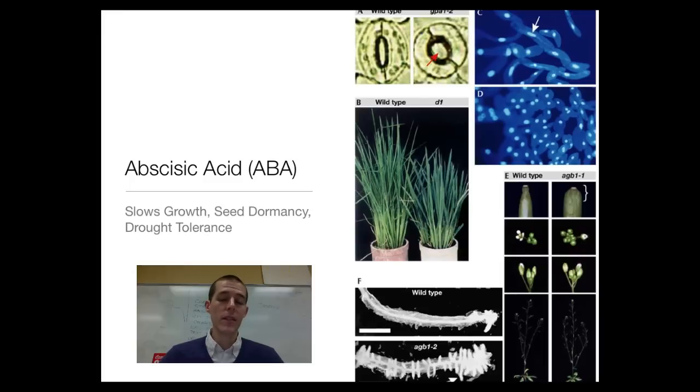This is what keeps seeds from germinating until the spring or when the conditions are right. It keeps seeds from germinating inside of a fruit. ABA also works on drought tolerance. If a plant starts to wilt, ABA causes the stomata to close, which slows the water loss of that plant.